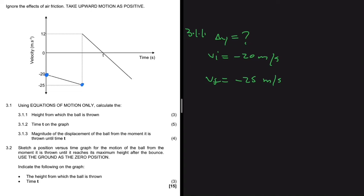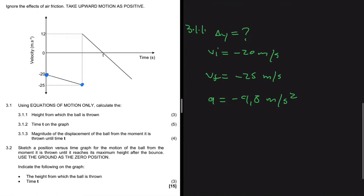We know acceleration is always constant. Taking upward as positive, our acceleration is minus 9.8 m/s². So we have vi, vf, and acceleration — and we need delta y. The equation of motion that has these four variables is: vf² = vi² + 2a·Δy.